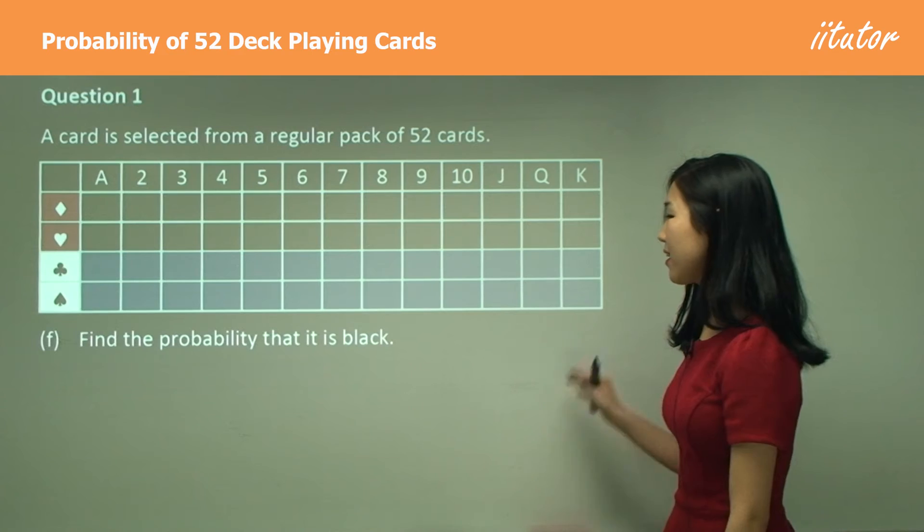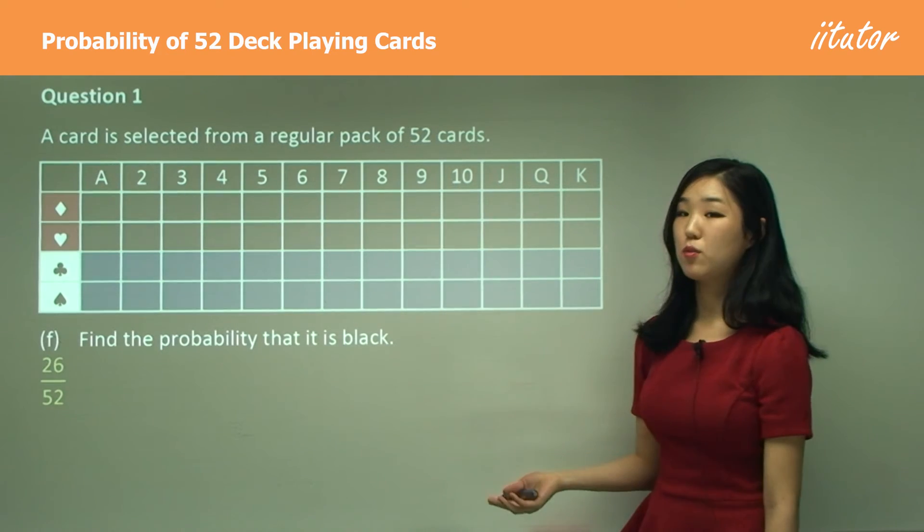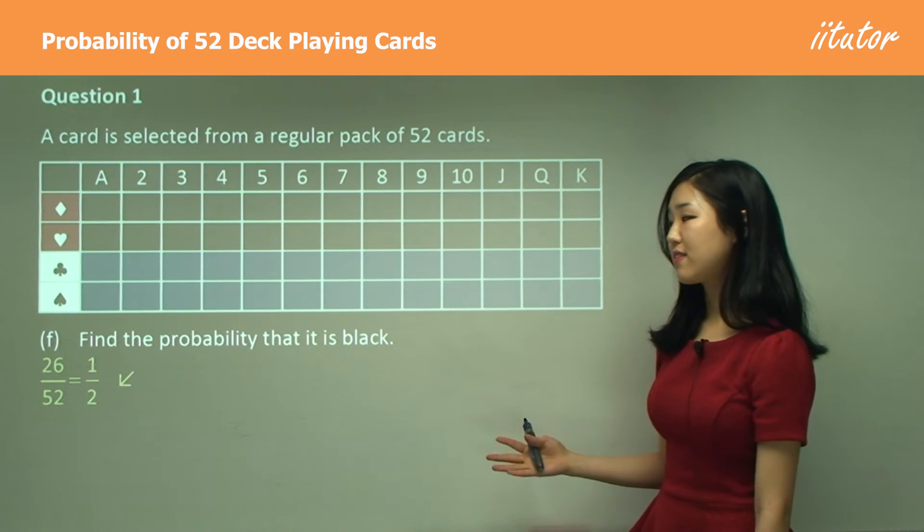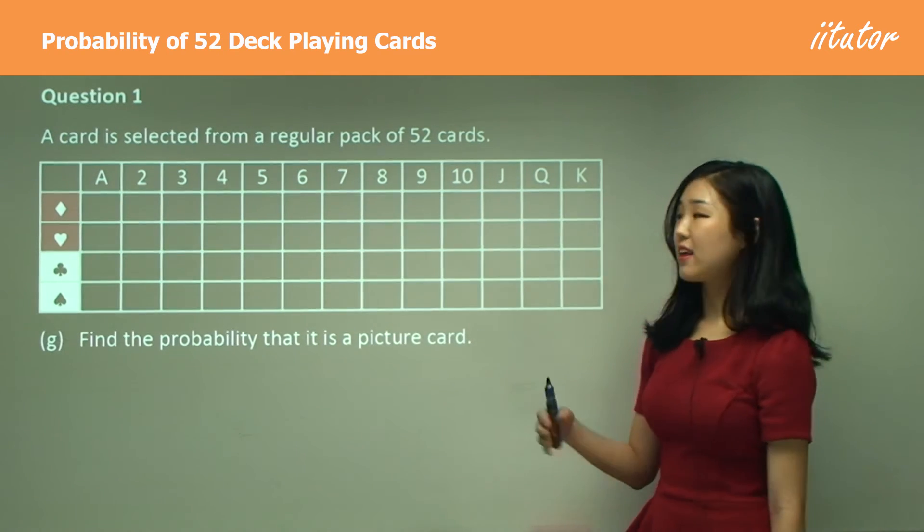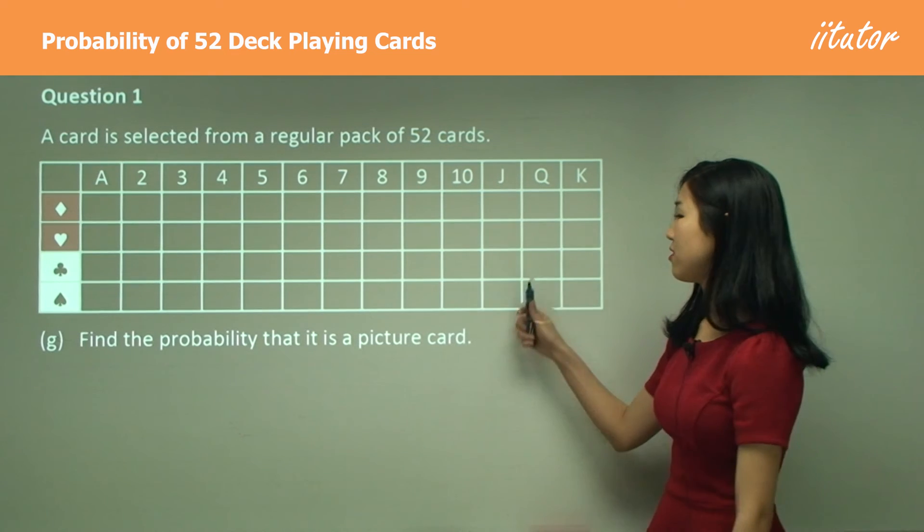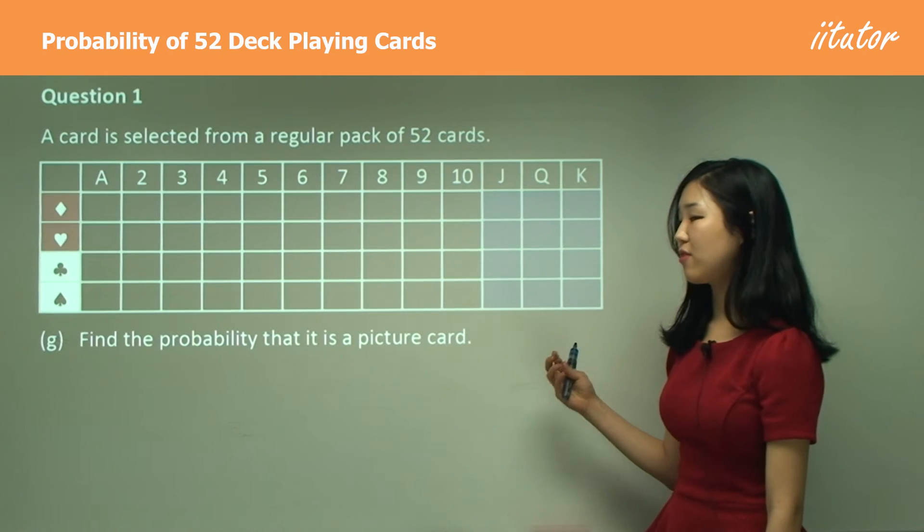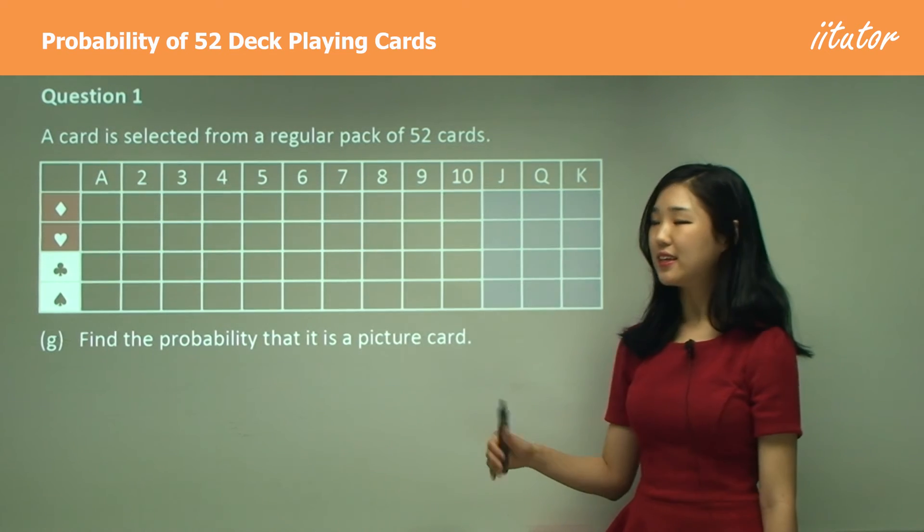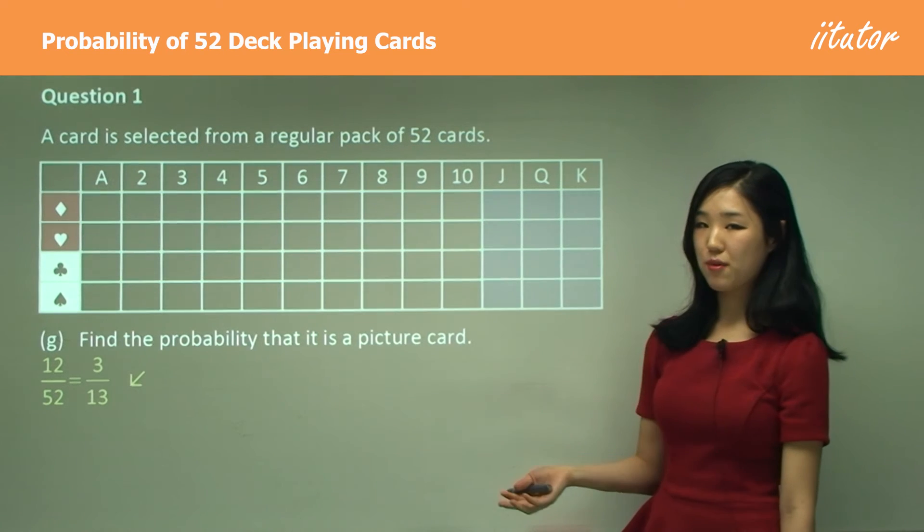Part f: Black card. Black is exactly half—just this part here—so it's simply 26 out of 52, which is exactly half. Part g: Find the probability that it is a picture card. Now picture card is the court cards that I mentioned—the Jack, Queen, and King. So these three are the picture cards, or sometimes you call it a court card. So it's simply 12 out of 52, which is simplified to 3 over 13.